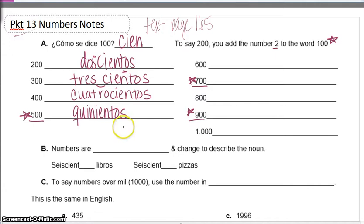If you think about the hotel — if you've ever heard of La Quinta, it's related. That means 'fifth.' It's the fifth hotel in their chain. Quinientos — five hundred.